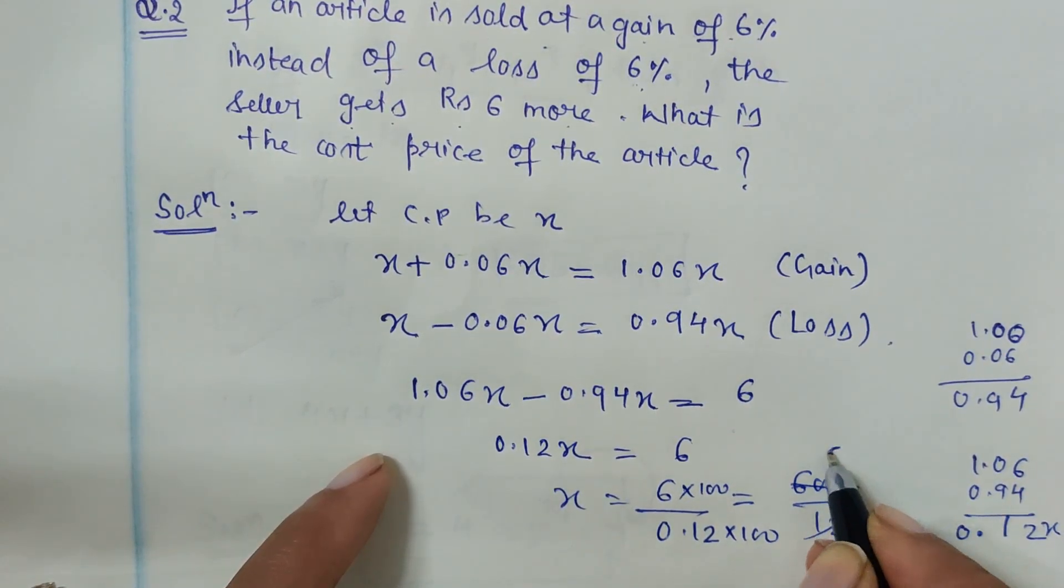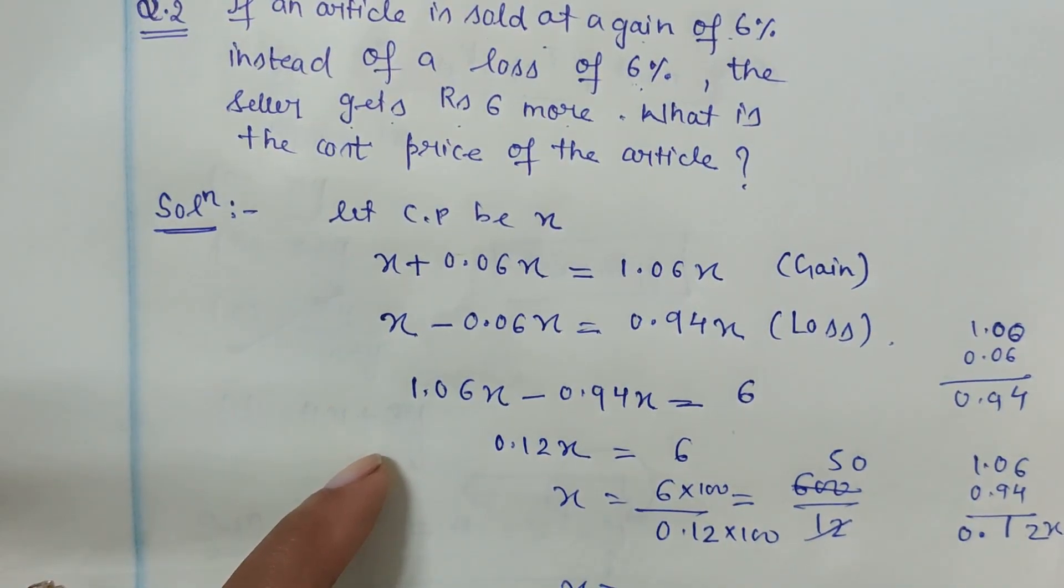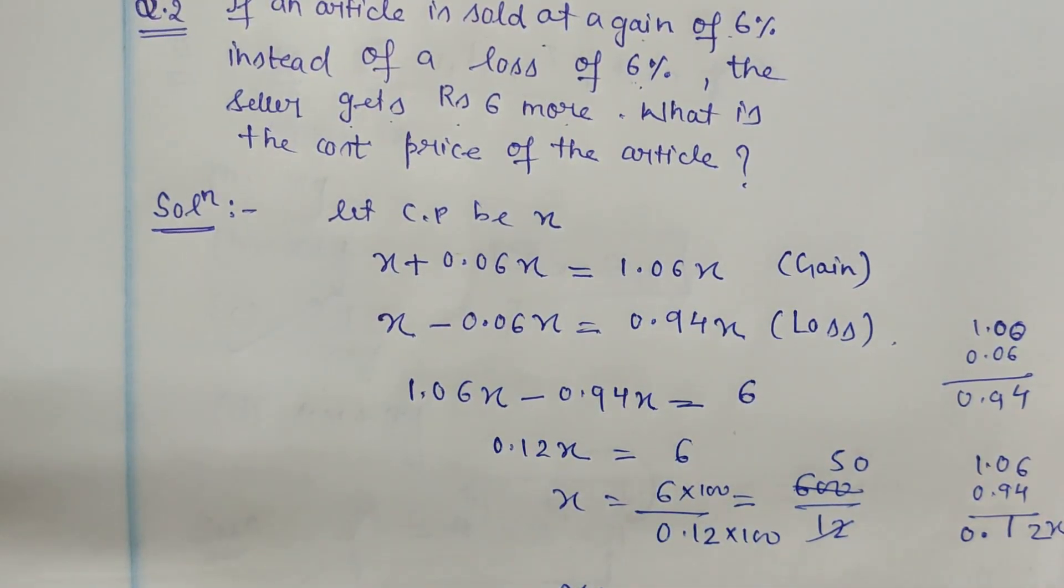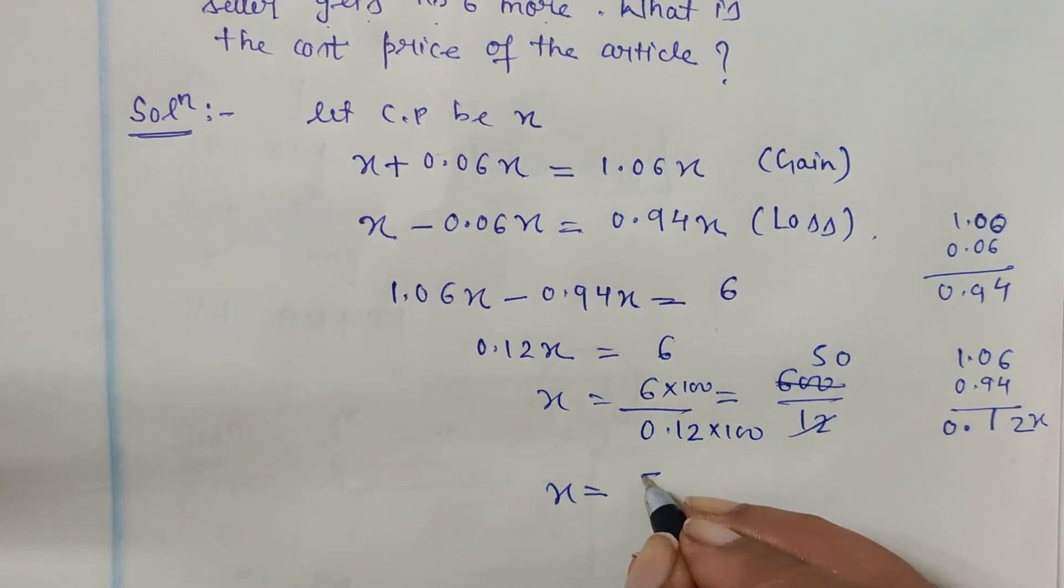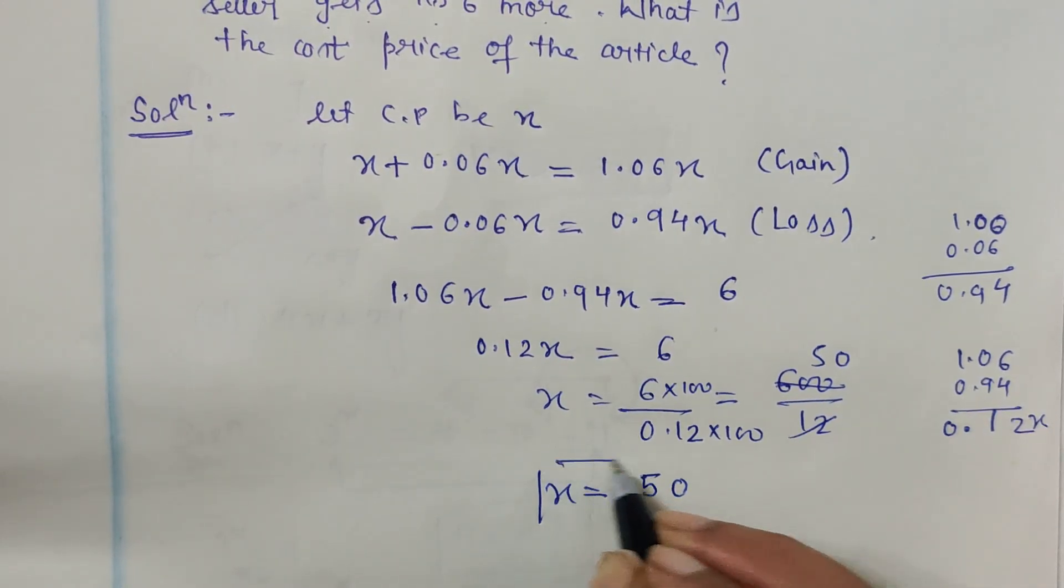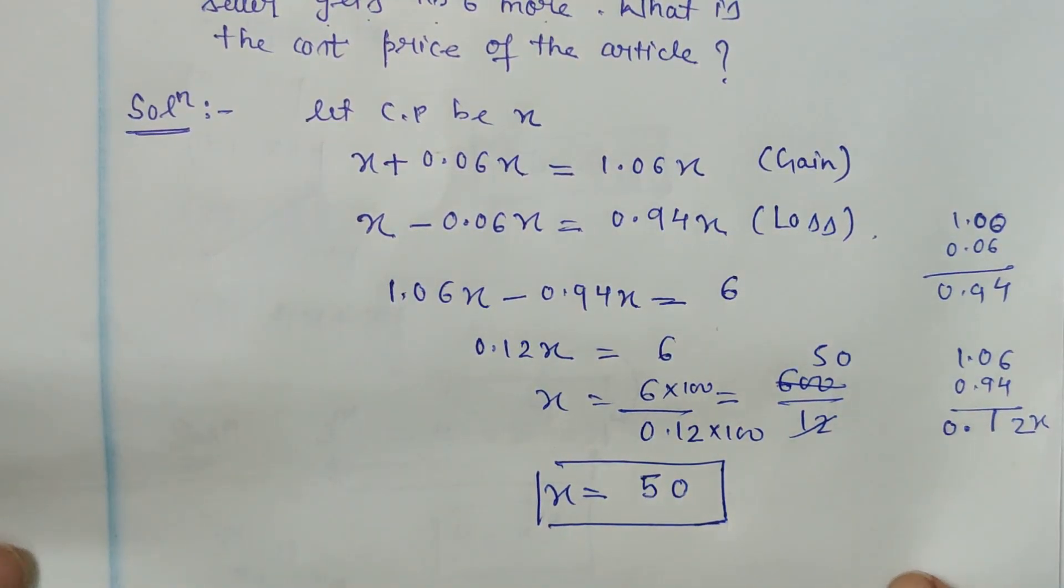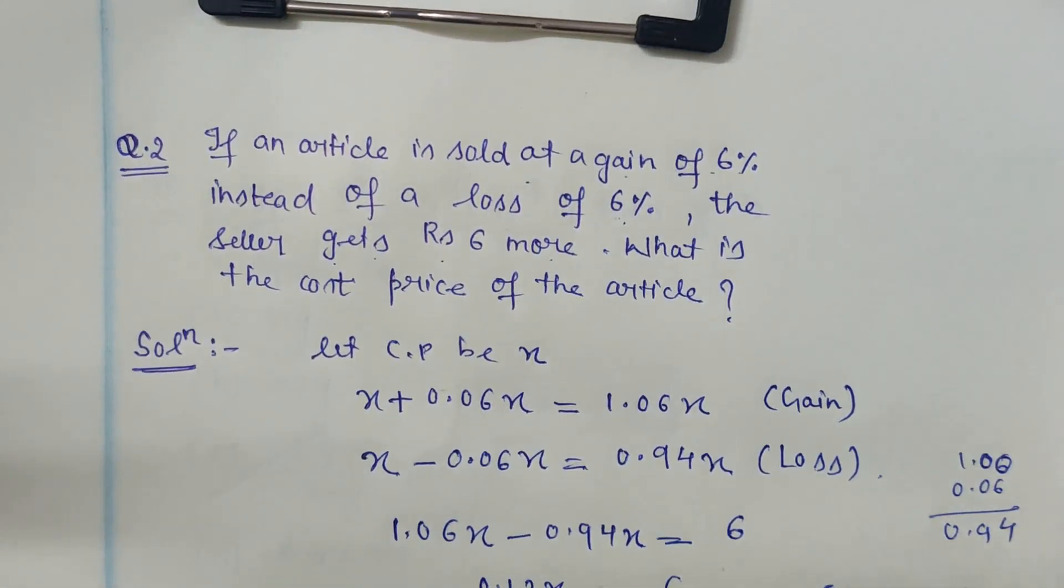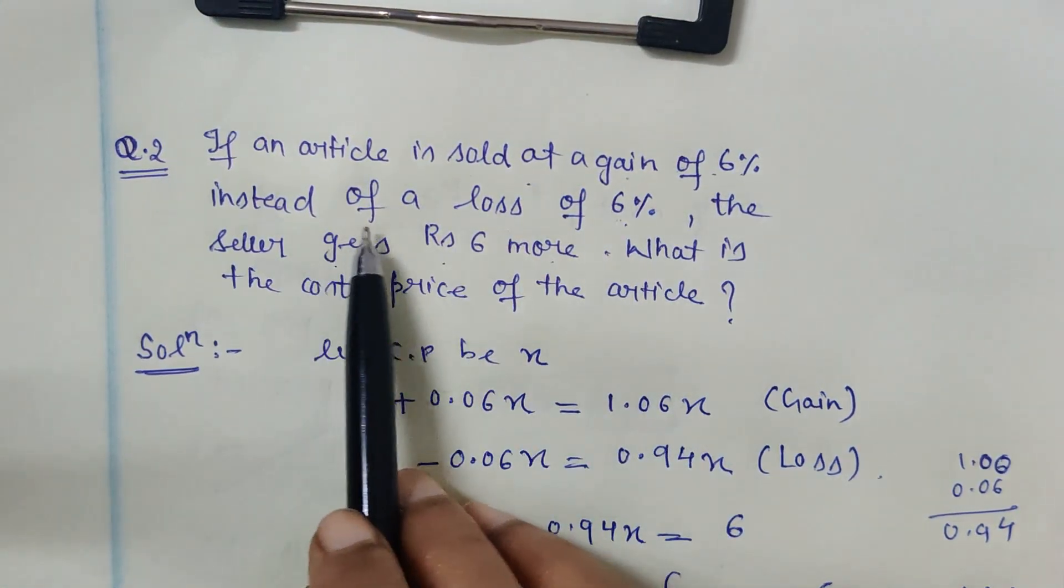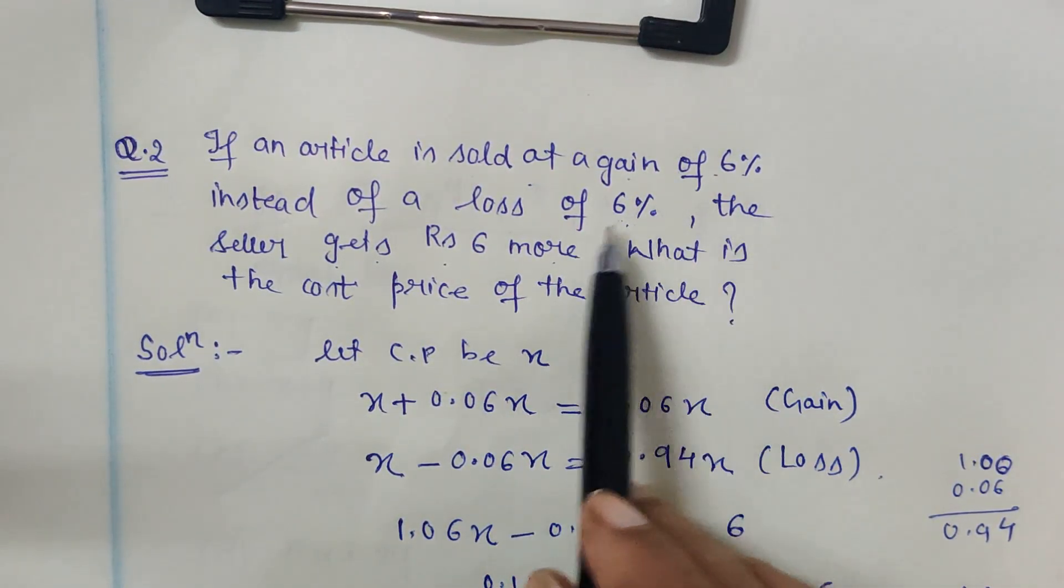This is the cost price. So this is how it is to be calculated if this type of question comes in an exam. If an article is sold at a gain of 6% instead of loss of 6%, we are talking about the difference. Instead of this we are having this, the seller gets rupees 6 more.